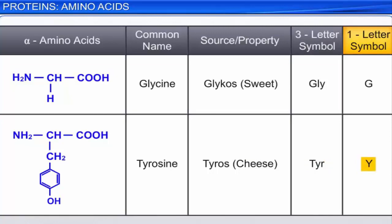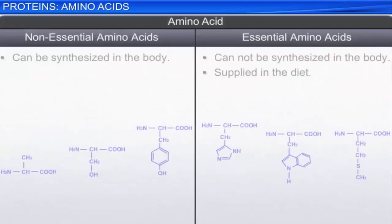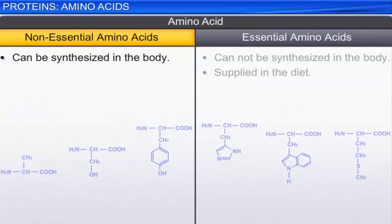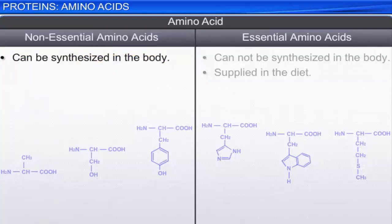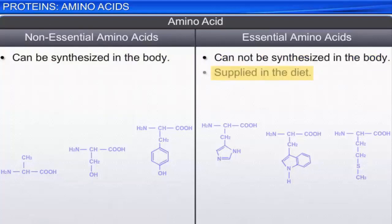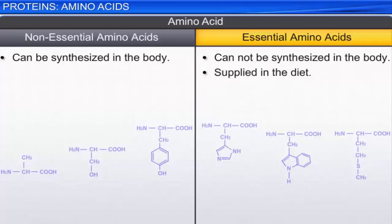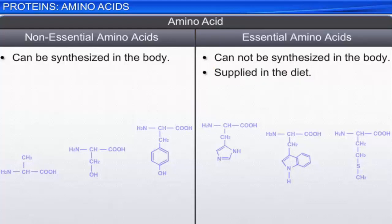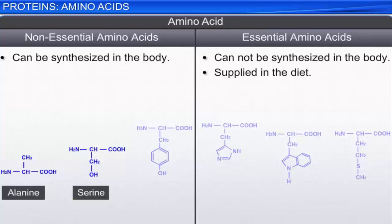Among the natural amino acids, the ones that can be synthesized in the body are called non-essential amino acids, whereas those that cannot be synthesized in the body and therefore must be included in the diet are called essential amino acids. Some examples of non-essential amino acids are alanine, serine, and tyrosine, while examples of essential amino acids are histidine, tryptophan, and methionine.